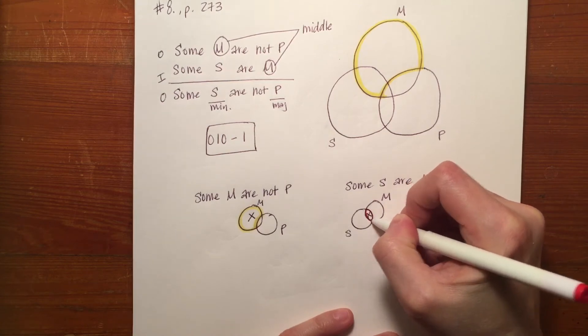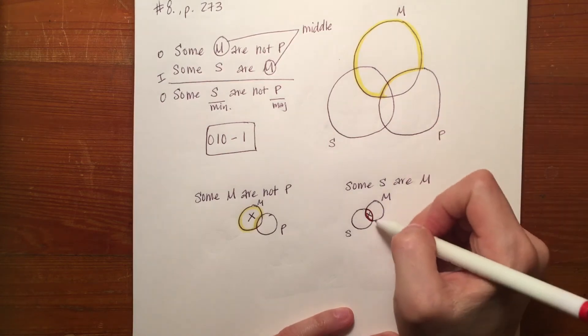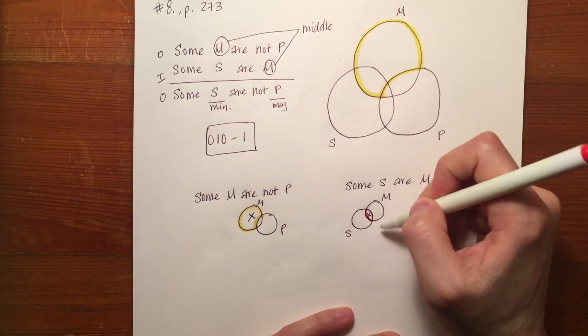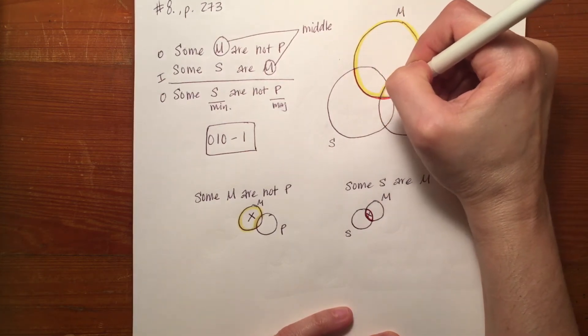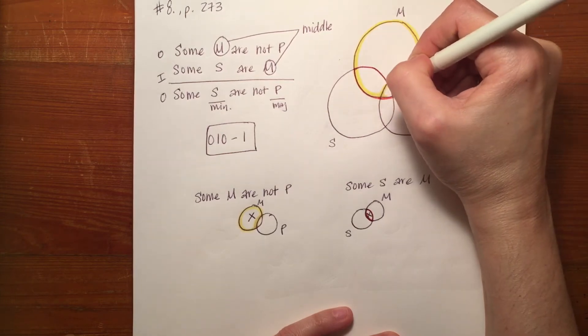Also, this area between S and M that I'm going to highlight in red is here in red on the larger diagram.